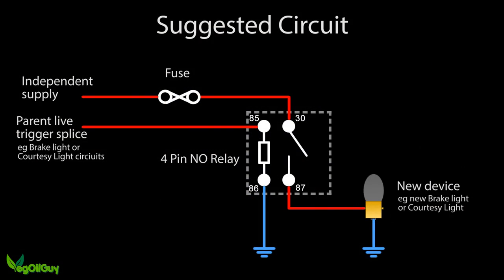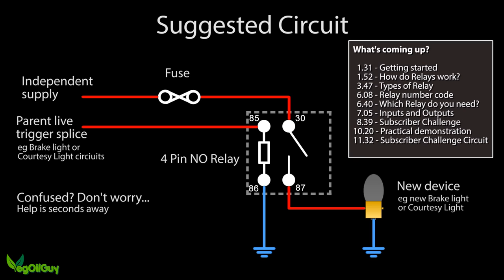Splice into the parent circuit and use the live feed to prime and trigger the relay. Wire a separate fuse line through the output terminals of the relay to power the new device. This safely powers the new device and circumvents any danger of overpowering the original circuit and possibly blowing the fuse. If all of this makes perfect sense to you then this video probably isn't for you.